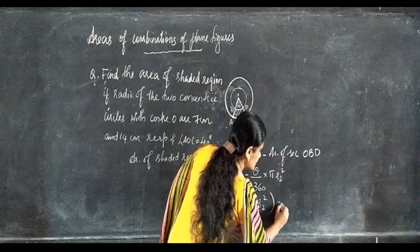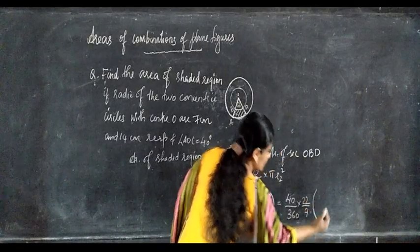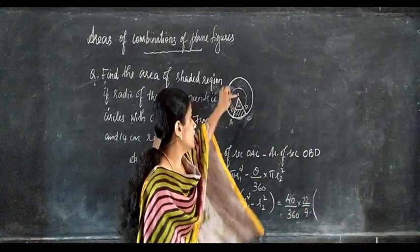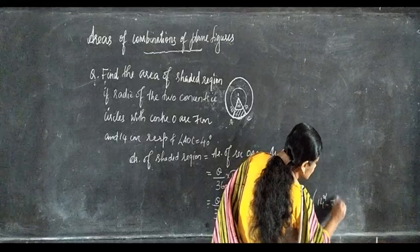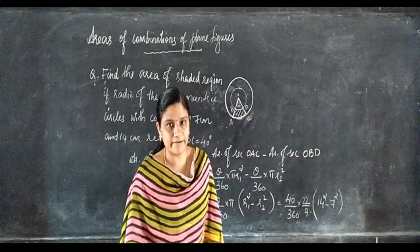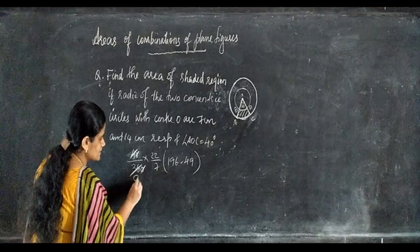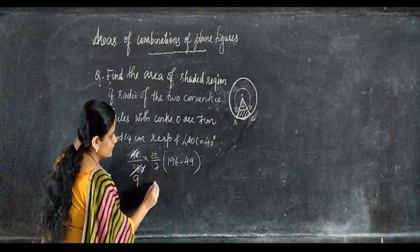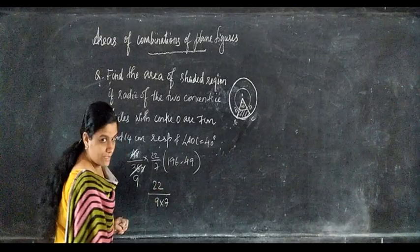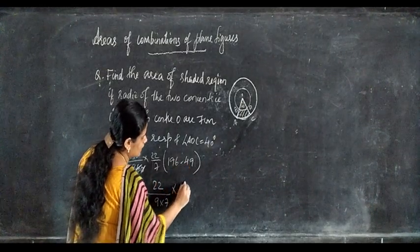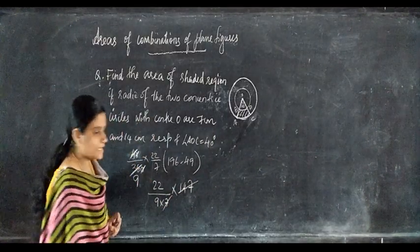Substituting: 40 by 360 into 22 by 7 into open bracket 14 squared minus 7 squared close bracket. Simplify 40 by 360 to 1 by 9. So: 22 by 9 into 7 into open bracket 196 minus 49 close bracket, which equals 22 by 9 into 7 into 147.